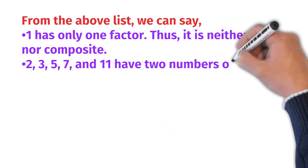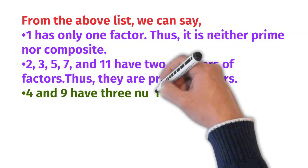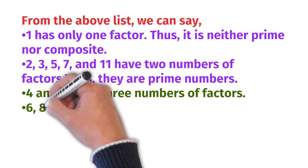2, 3, 5, 7 and 11 have two numbers of factors, thus they are prime numbers.